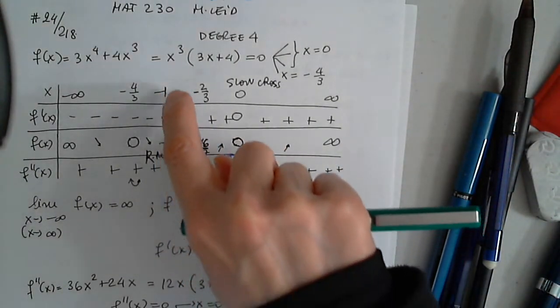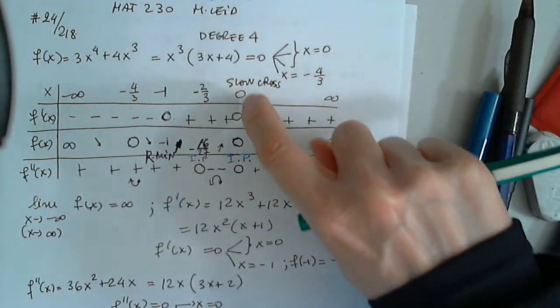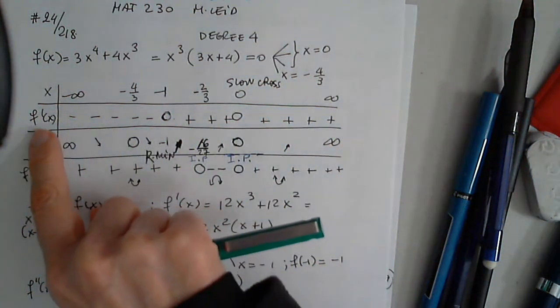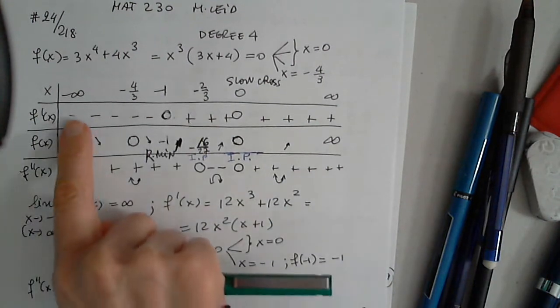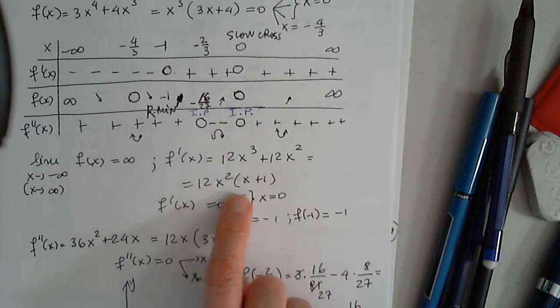At 0 is negative 1. At negative 1 is 0, I have to write 0 in the table. At 0 is 0, I have to write 0 in the table for f prime. Then I have to study the sign of the derivative.